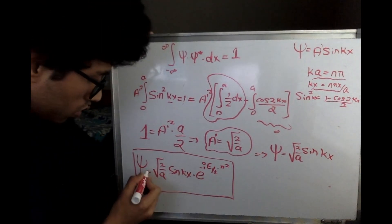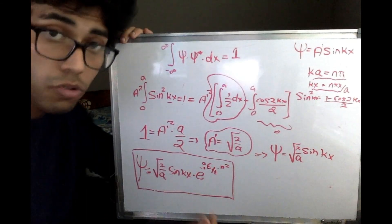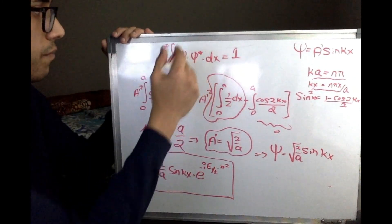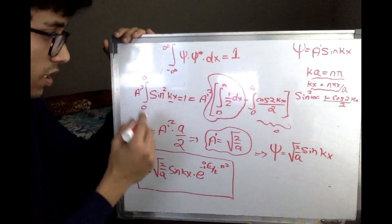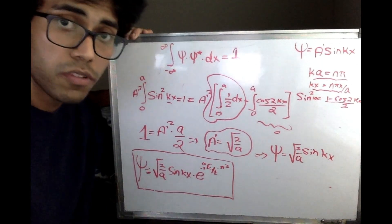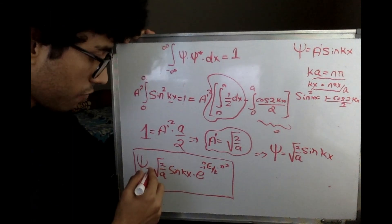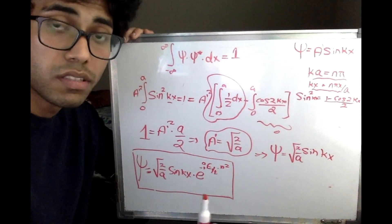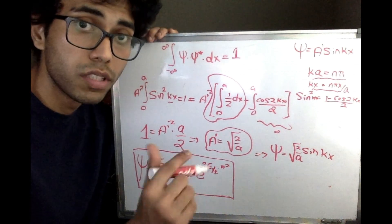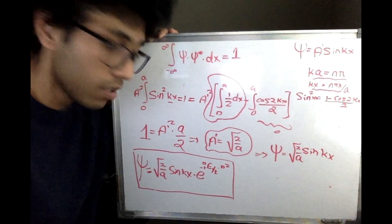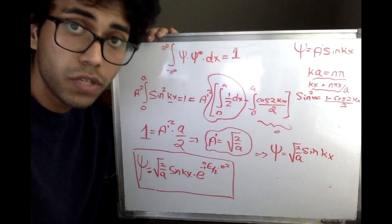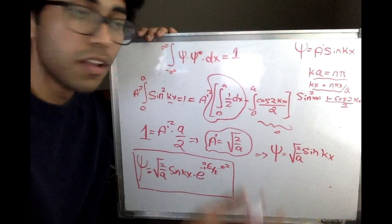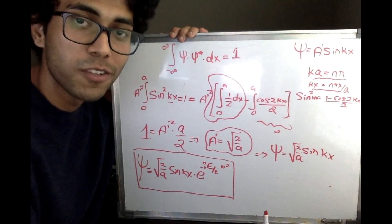This is a normalized function, which makes it easy to calculate the probability density. To find the probability in any region, just integrate this function over that region — the total must equal 1. In the next video, we will talk about examples for this wave function ψ for both a macroscopic and a microscopic object. If you have any doubts about the energy being discrete, the particle being quantized, or the normalization of the wave function, please let me know in the comments. Thank you very much for watching — subscribe for more.